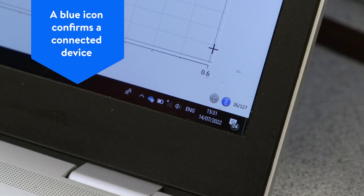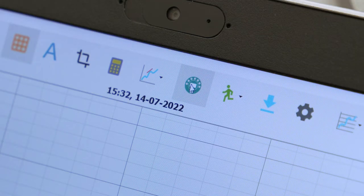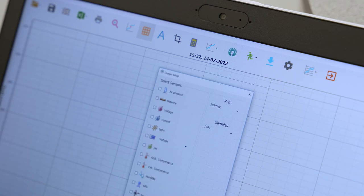You should see the icon change from grey to blue indicating connection has been achieved. Click on the sensor disk icon on the toolbar of the software to allow you to configure the sensor disk.